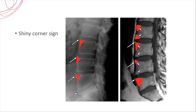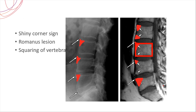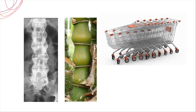Abnormal sclerosis at the corners of the vertebra, especially surrounding an area of erosion, is called a Romanus lesion. Other findings include squaring of the vertebra, which gives the classic bamboo spine appearance.